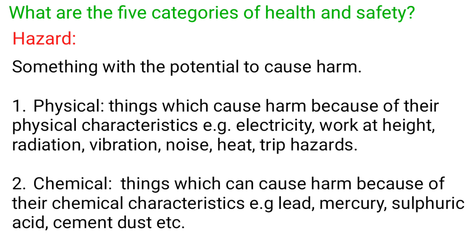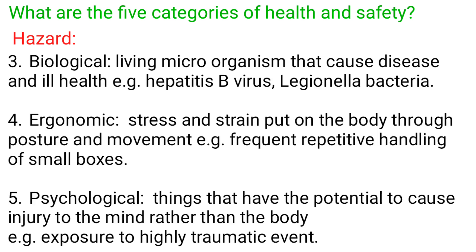2. Chemical: things which can cause harm because of their chemical characteristics, e.g. lead, mercury, sulfuric acid, cement dust, etc.